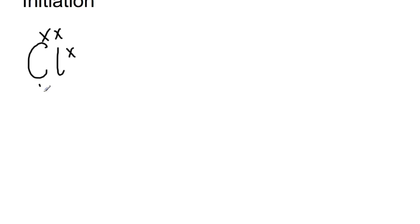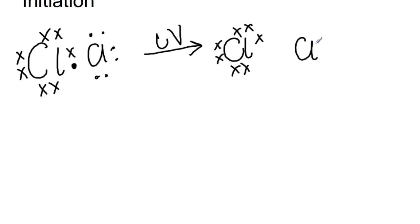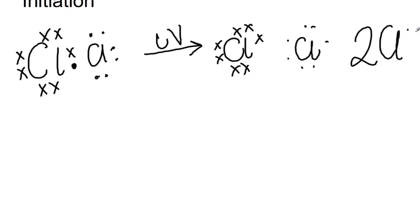The first step in this reaction is the initiation step, and this occurs when UV light breaks the chlorine-chlorine bond. If we draw out chlorine using a dot and cross diagram, you can see the bond between the chlorine atoms. If we break this bond using UV light, we get two chlorine radicals where each chlorine has an unpaired electron. This makes radicals extremely reactive and means they can go on and participate in the chain reaction. We can also write this as 2Cl dot, the dot meaning that we have a radical.